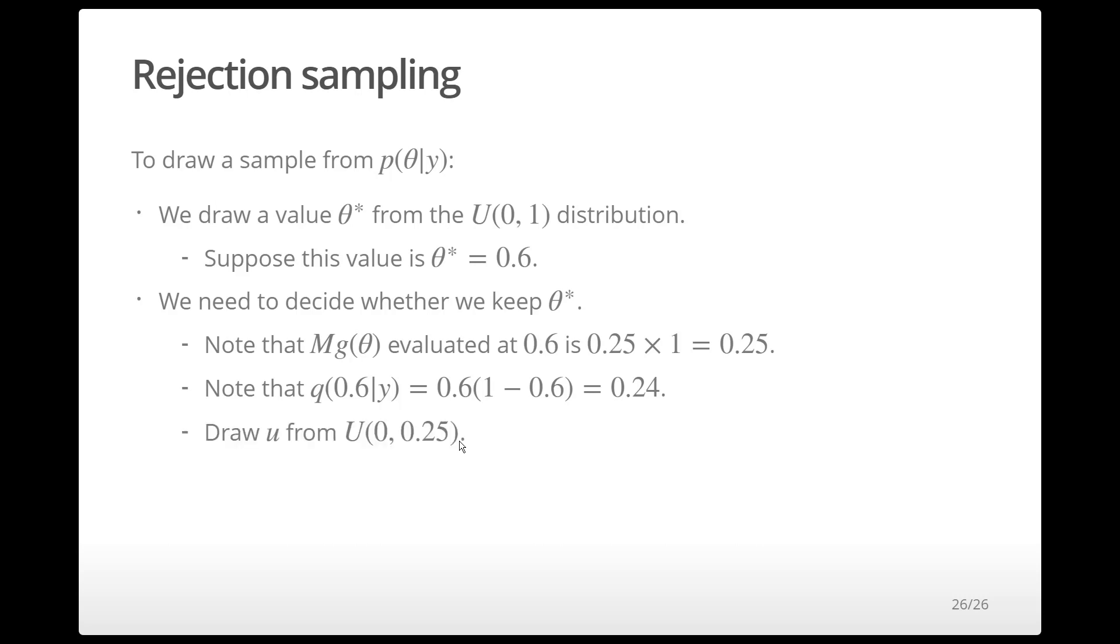Thus, we draw u from a uniform 0 to 0.25 density, where the upper bound comes from evaluating g times m at theta star. If u is less than or equal to 0.24, then we accept theta star as a sample from the target density.